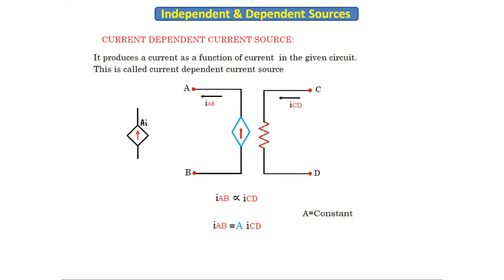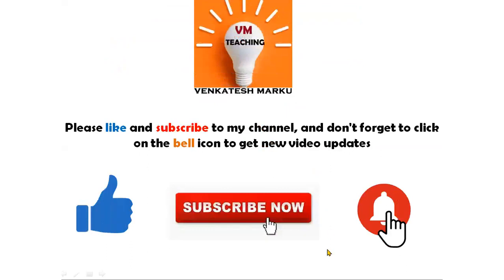These dependent sources are used in amplifier circuits. In the next class we will see what are ideal sources and practical sources for both voltage and current. This concludes today's class. Thank you everyone.